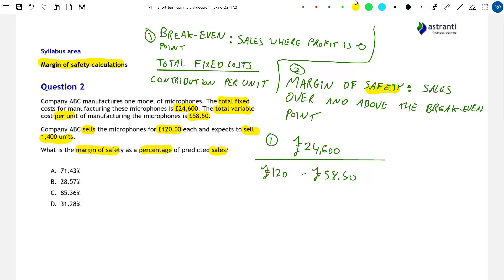So by subtracting the total variable cost per unit of manufacturing the microphones from the selling price of these microphones, we can calculate the contribution per unit. So I'll write the formula down for finding the contribution as a quick recap. So the contribution per unit is equal to the selling price per unit minus the variable costs per unit, which is what we've done here.